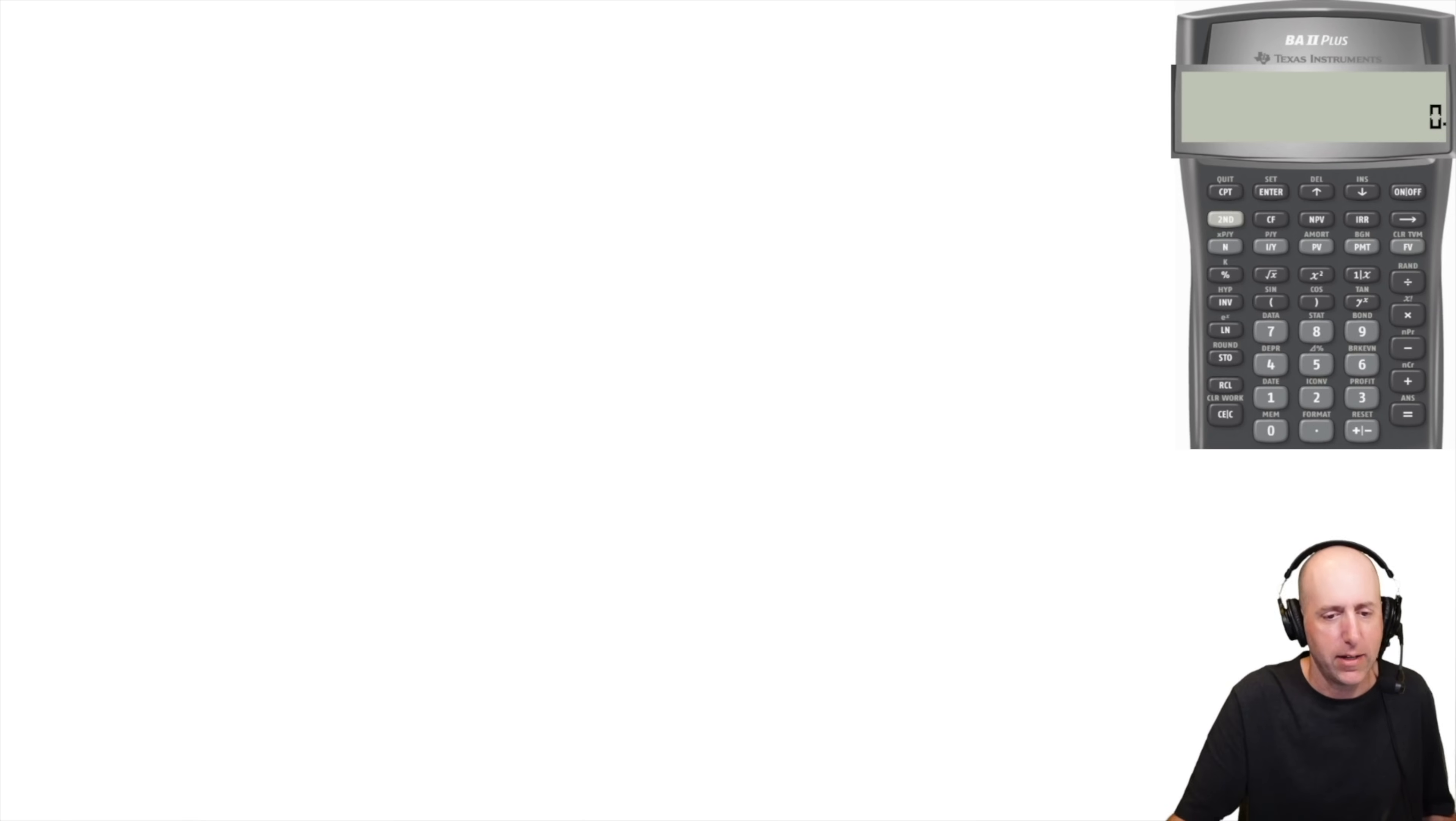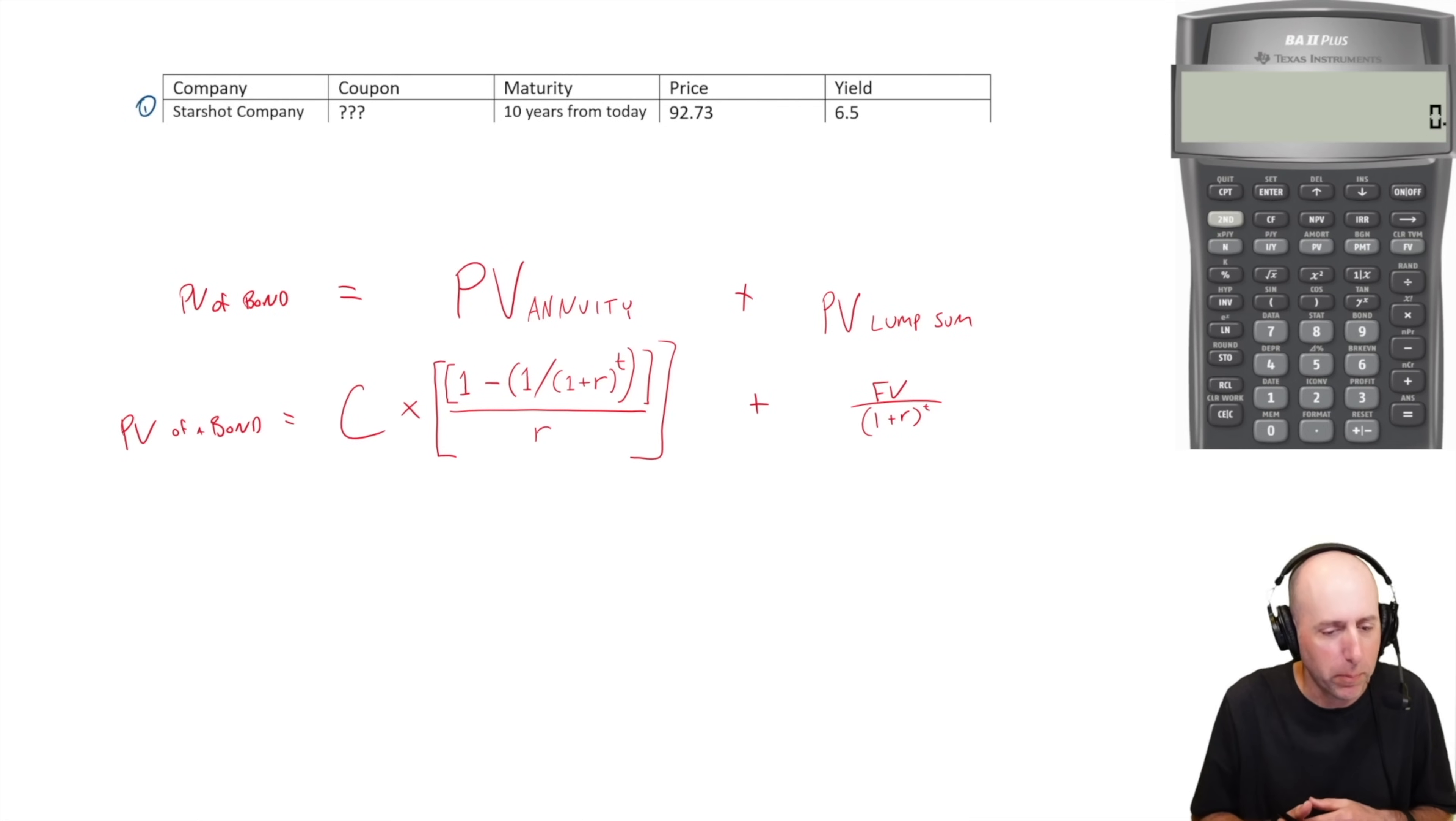We'll do Starshot company by hand. To do it by hand, you have to break the bond down into its component parts. There's the present value of an annuity, those recurring payments - we'll take the present value of those - and we'll also take the present value of the lump sum, the $1000 at the end of the bond. That combines to give us the present value of the bond. In this question we're missing the coupon, the regular payment, the regular cash flow of the bond. That's what we're looking for, and that is right here. That's what we're solving for. We should have every other component of this, and we do. We have the present value of the bond. The bond price is 92.73% of $1000, so the PV of the bond is $927.30.